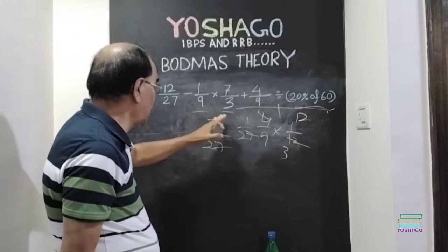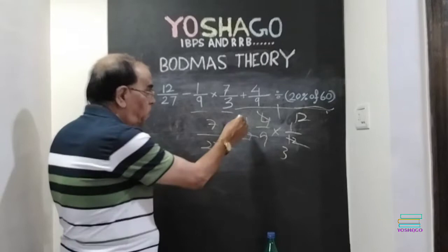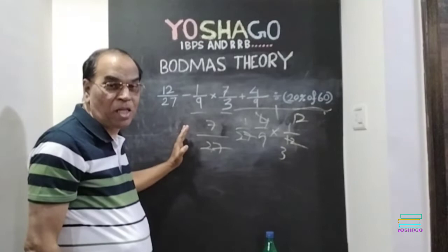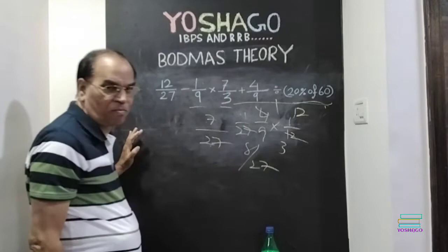Then, addition. 7 by 27 plus 1 by 27. What we have got here? 7 by 27 plus 1 by 27. That is, 8 by 27.